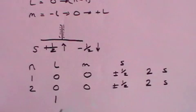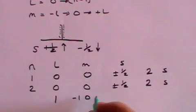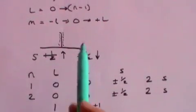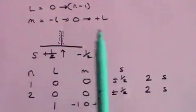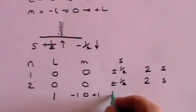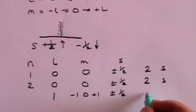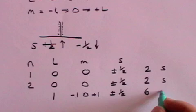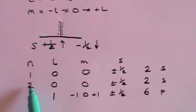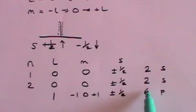But when l is one, m can be minus one, zero, or plus one according to this rule here. And again the electrons can in each case be in the up or down state, and that means you have one, two, three states each of which can have two electrons, so that's six total. That's called the p level by spectroscopists.